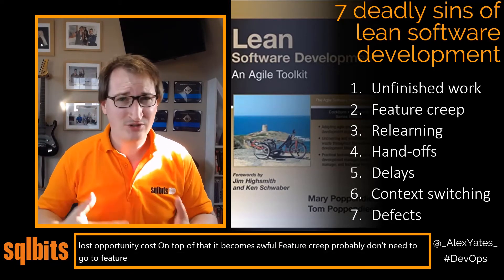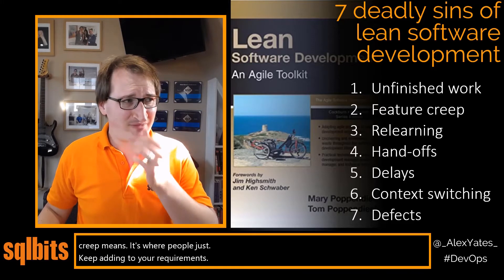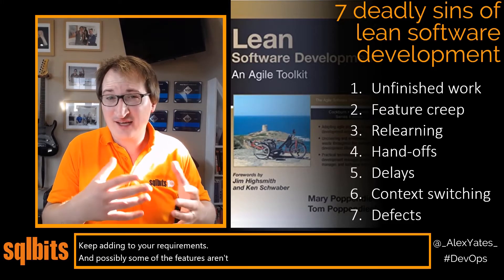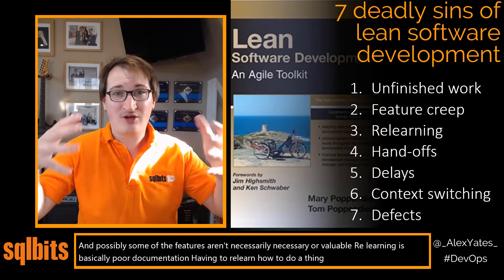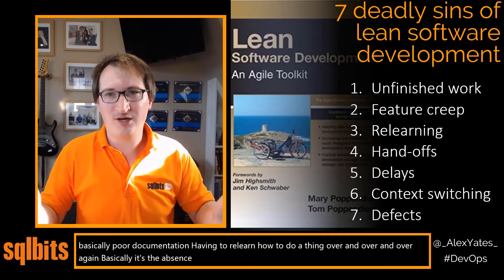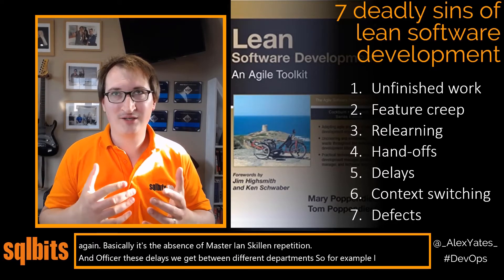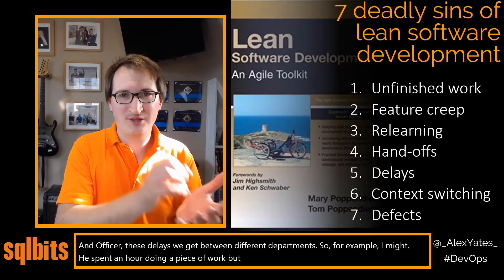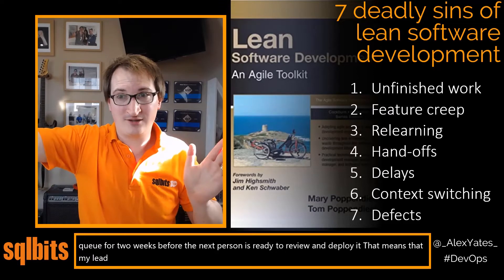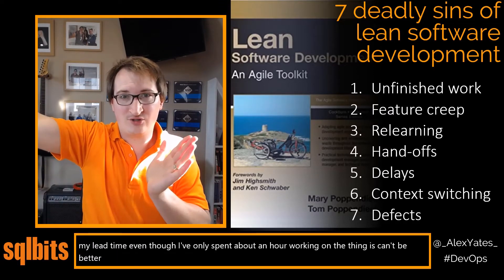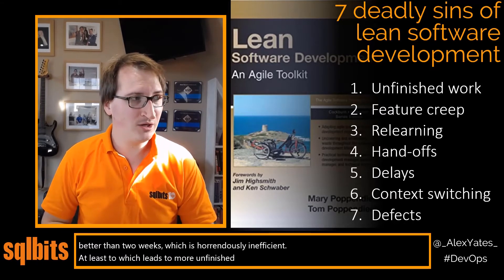Feature creep — you're probably aware of what that means: people just keep adding to your requirements, and possibly some features aren't necessary or valuable. Relearning is basically poor documentation — having to relearn how to do a thing over and over again; it's the absence of mastery, skill, and repetition. Handoffs are delays between different departments — you might have spent only an hour doing a piece of work, but then the thing waits in a queue for two weeks before the next person reviews and deploys it. That means your lead time, even though you've only spent an hour on the work, can't be better than two weeks — which is horrendously inefficient, leading to more unfinished work and all the problems that creates.